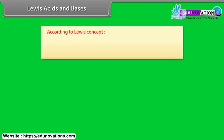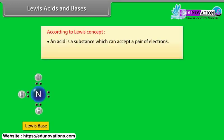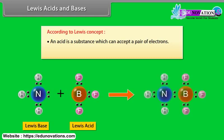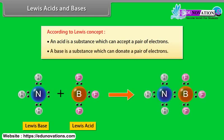Lewis acids and bases. According to Lewis concept, an acid is a substance which can accept a pair of electrons. A base is a substance which can donate a pair of electrons. For example, in the reaction, BF3 acts as a Lewis acid.